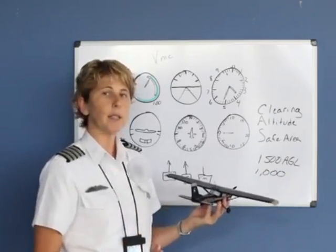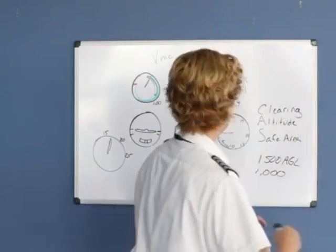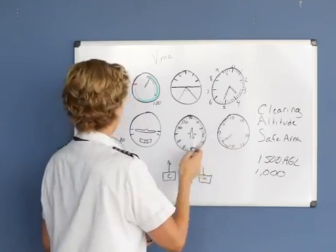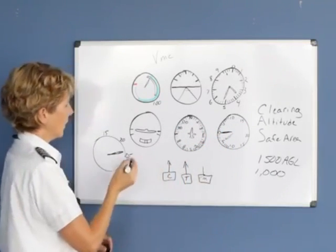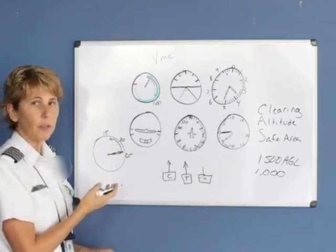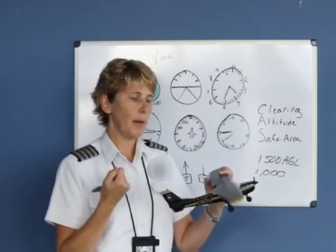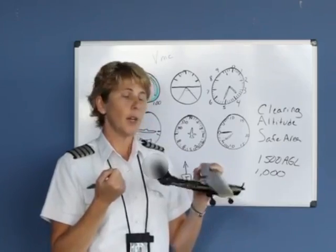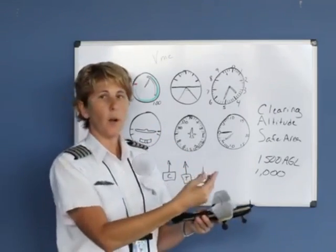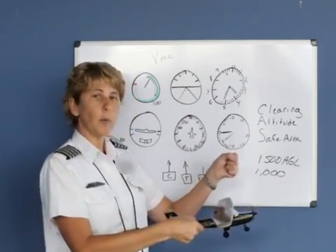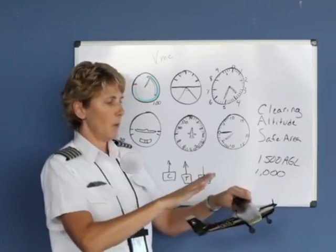The examiner may also ask you to set up a descent. In this configuration, power controls the descent. If asked to descend at, say, 500 feet per minute, pull the power back to around 1,500 or 1,700 RPMs to allow the airplane to descend. When you reduce power, the nose will want to drop, which would increase airspeed — but you're supposed to maintain that slow airspeed. So simultaneously, as you reduce power to set up the descent, pull a little back pressure and re-trim the airplane so it remains in the same pitch-up attitude while descending and maintaining that slow airspeed.